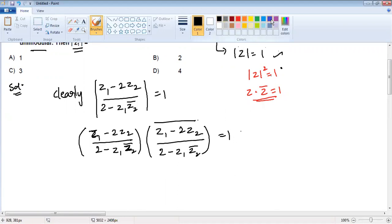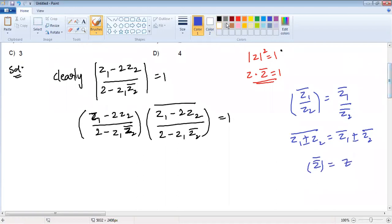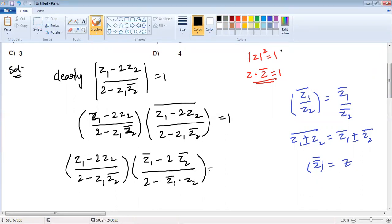Now what formulas will be useful here? Z1 Z2 bar equals Z1 bar Z2 bar. So this becomes (Z1 minus 2Z2) divided by (2 minus Z1 Z2 bar). Then apply the bar: Z1 bar minus 2 into Z2 bar (for real numbers the bar cannot be applied) divided by 2 minus Z1 bar into Z2 bar equals 1.